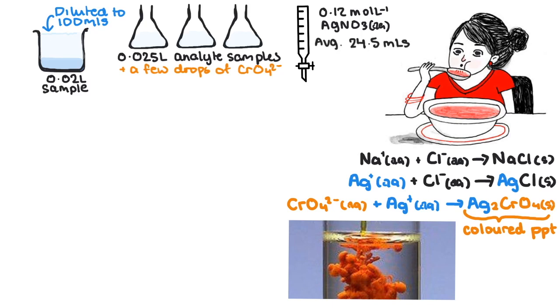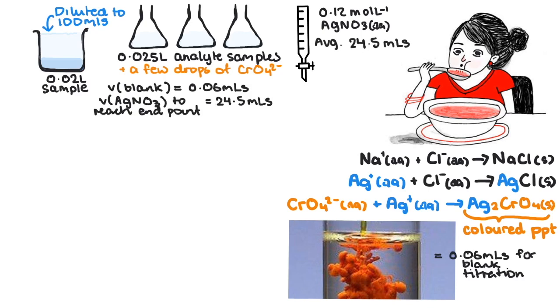In this case we'll say it's about 0.6 ml. And if it required 24 ml of silver nitrate to precipitate out the chloride ions, we must subtract the volume used in the blank titration from the endpoint. So the actual volume required is 23.9 ml.